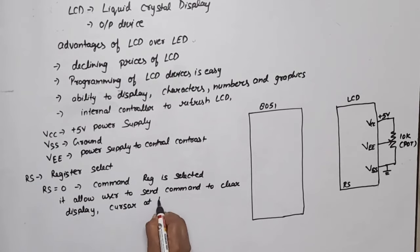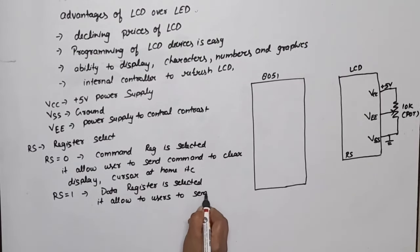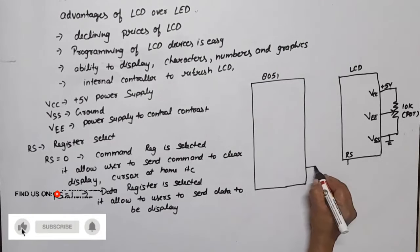When RS equals 1, the internal data register is selected. If data register is selected, it allows users to send data to be displayed. The data you want to display, you can send through this. Now this RS pin is connected with P2.0, means port 2 pin number 0.